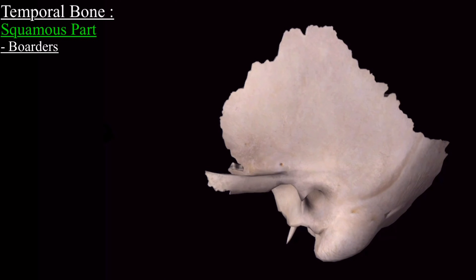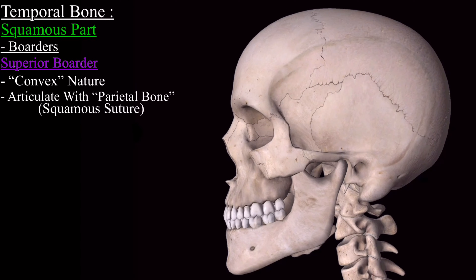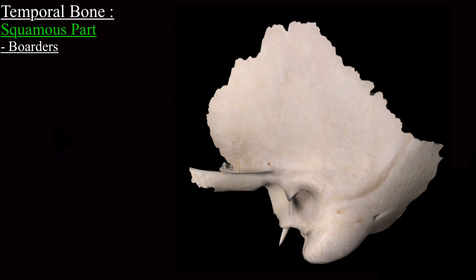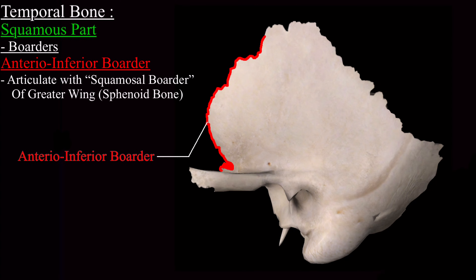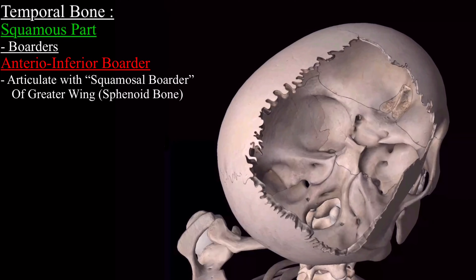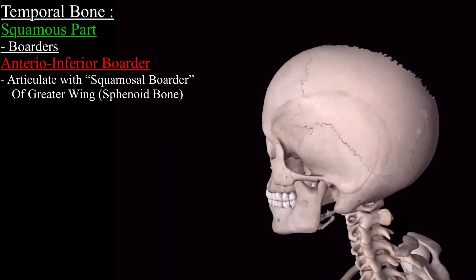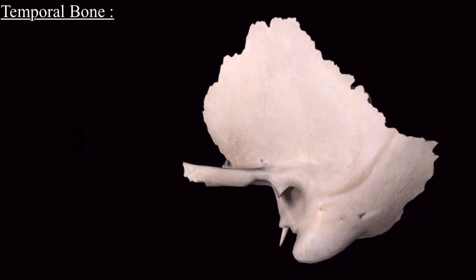Now we come to the borders of the squamous part. The superior border is convex in nature with the convexity facing upward, and it articulates with the parietal bone via the squamous suture. The anterior inferior border joins with the squamous border of the greater wing of the sphenoid bone.